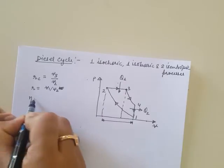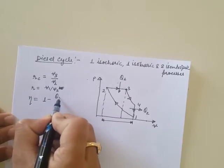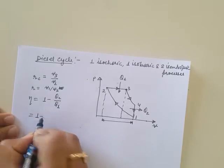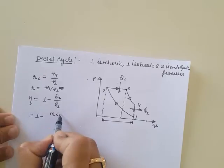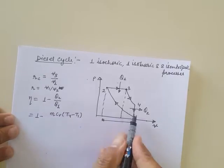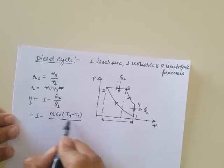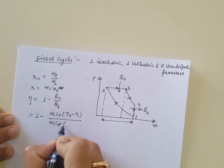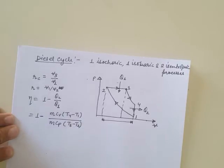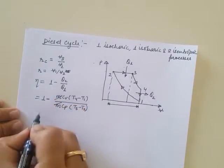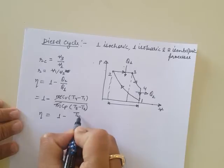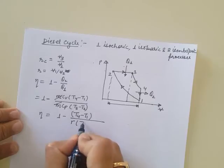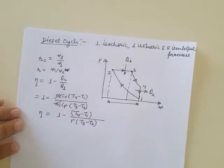The efficiency of the Diesel cycle is again 1 - Q2/Q1. Q2 is the isochoric heat rejection: m·Cv·(T4 - T1). Q1 is the isobaric heat addition: m·Cp·(T3 - T2). This gives efficiency = 1 - (T4 - T1) / [γ·(T3 - T2)], where γ = Cp/Cv is the adiabatic exponent.